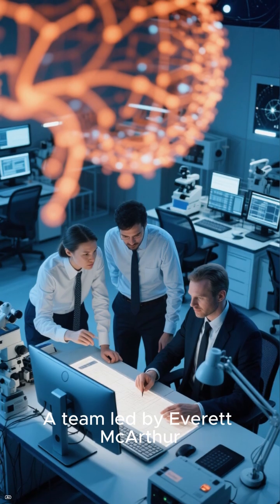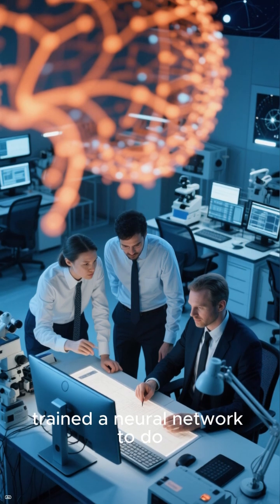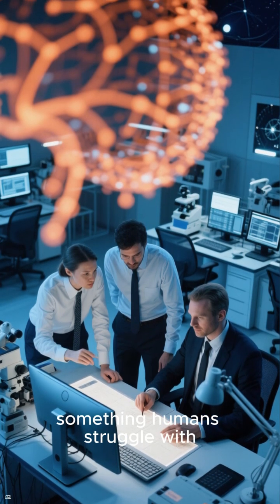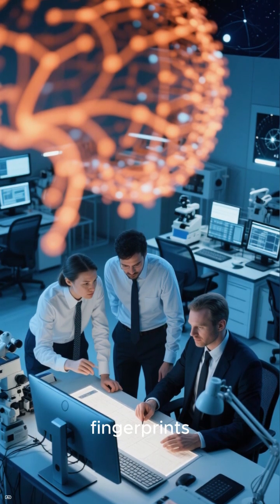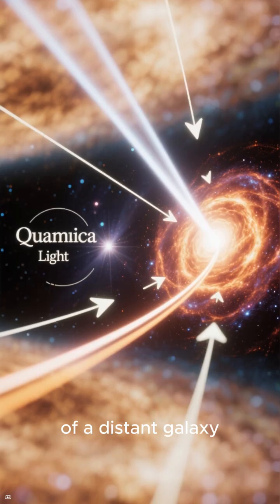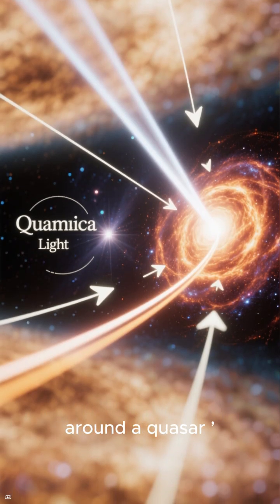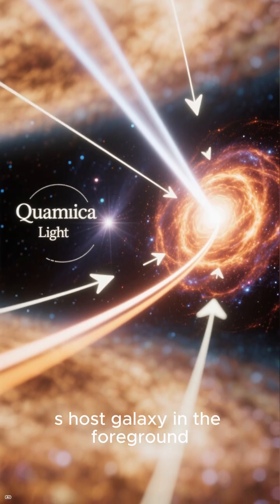A team led by Everett MacArthur trained a neural network to do something humans struggle with: spotting the faint spectral fingerprints of a distant galaxy whose light has been bent around a quasar's host galaxy in the foreground.